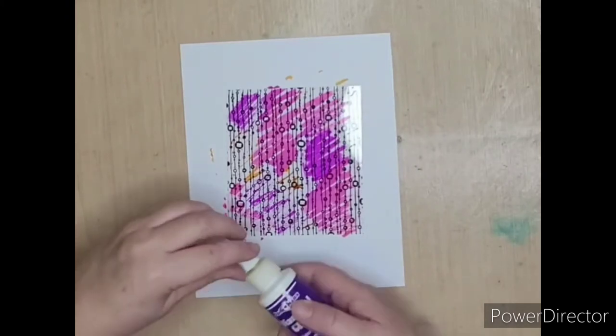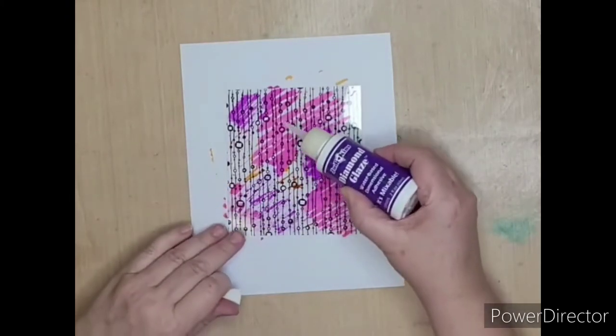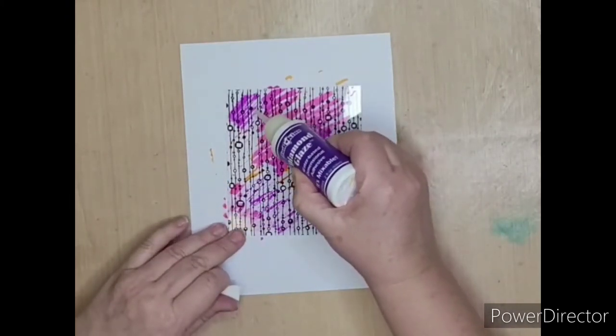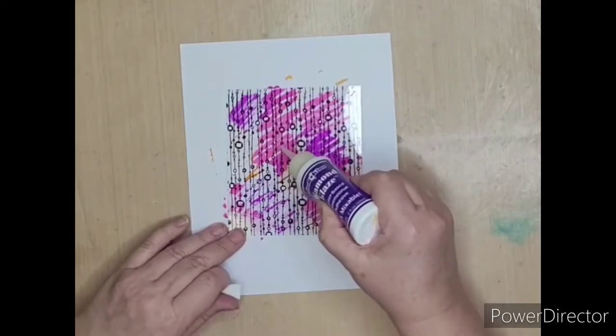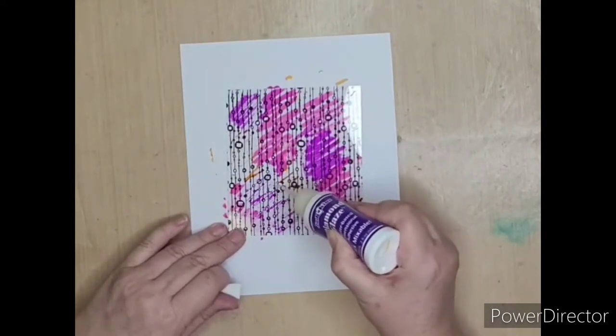Once you've finished coloring your design, we're then going to pour over the diamond glaze, the clear dimensional adhesive that is water-based and mixes perfectly with inks and paints.